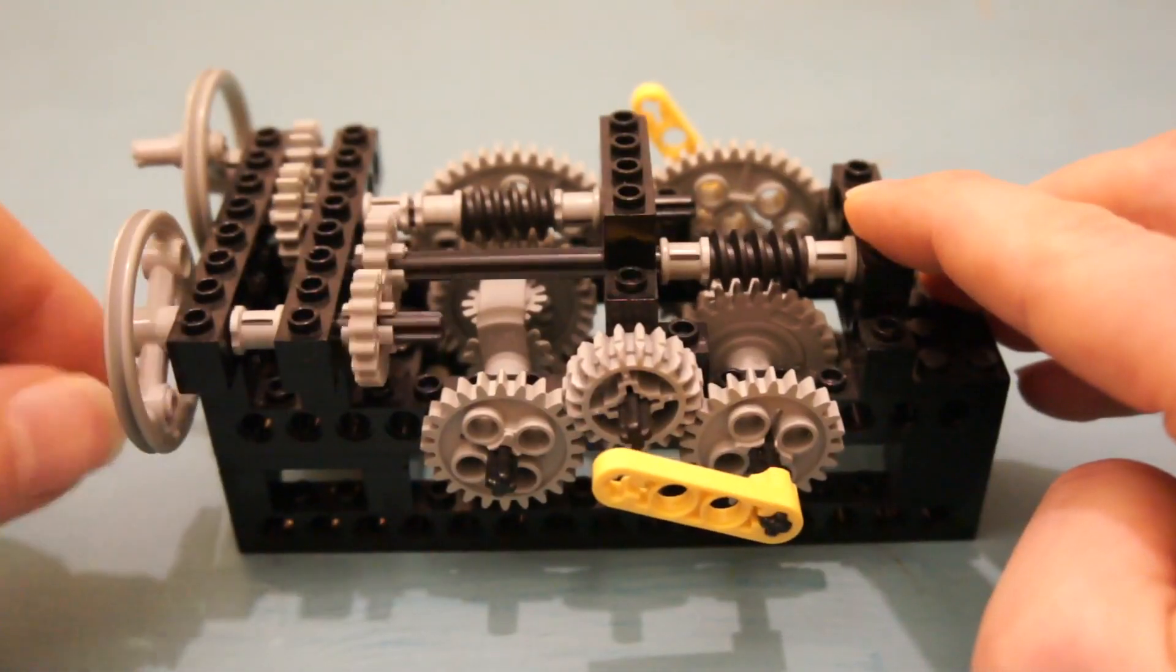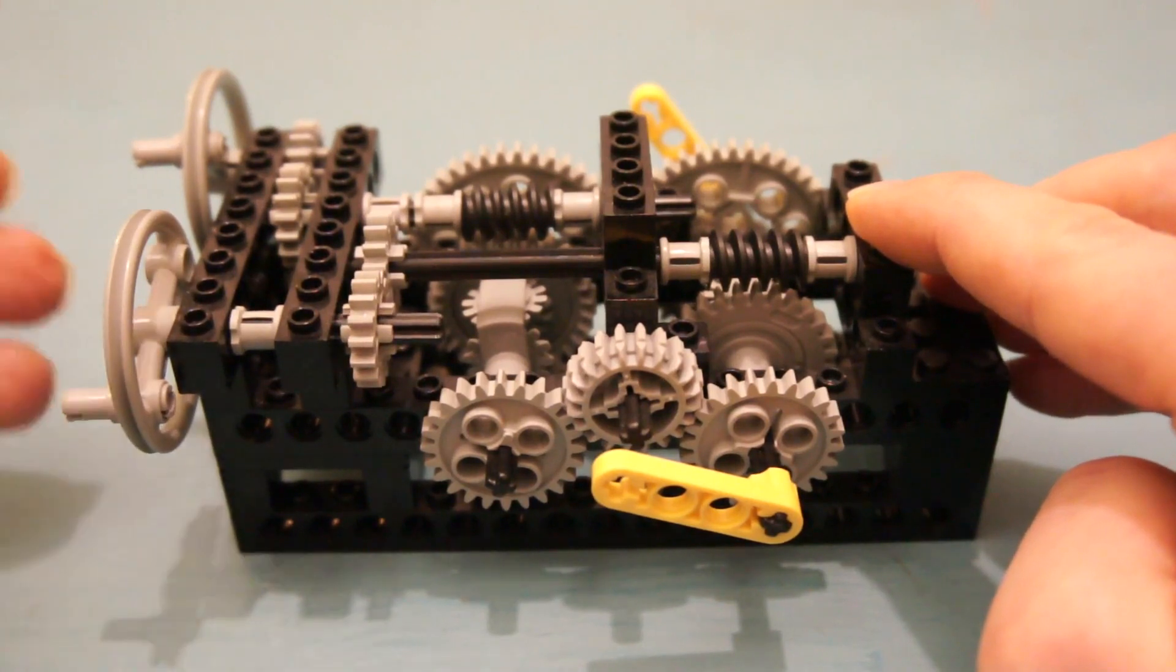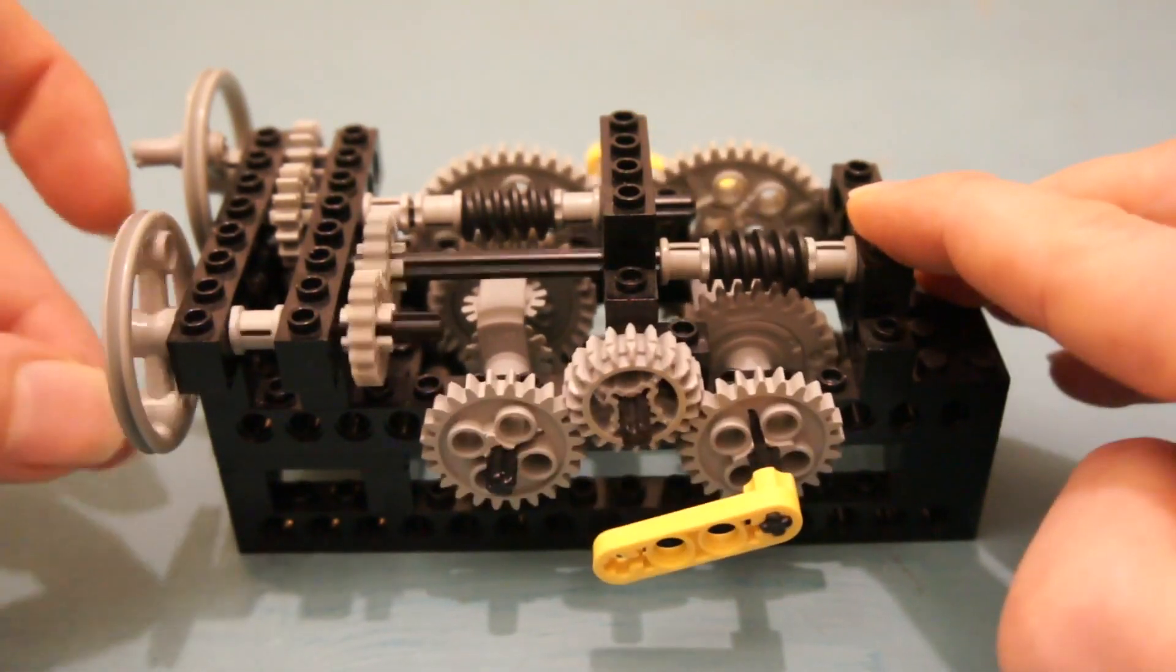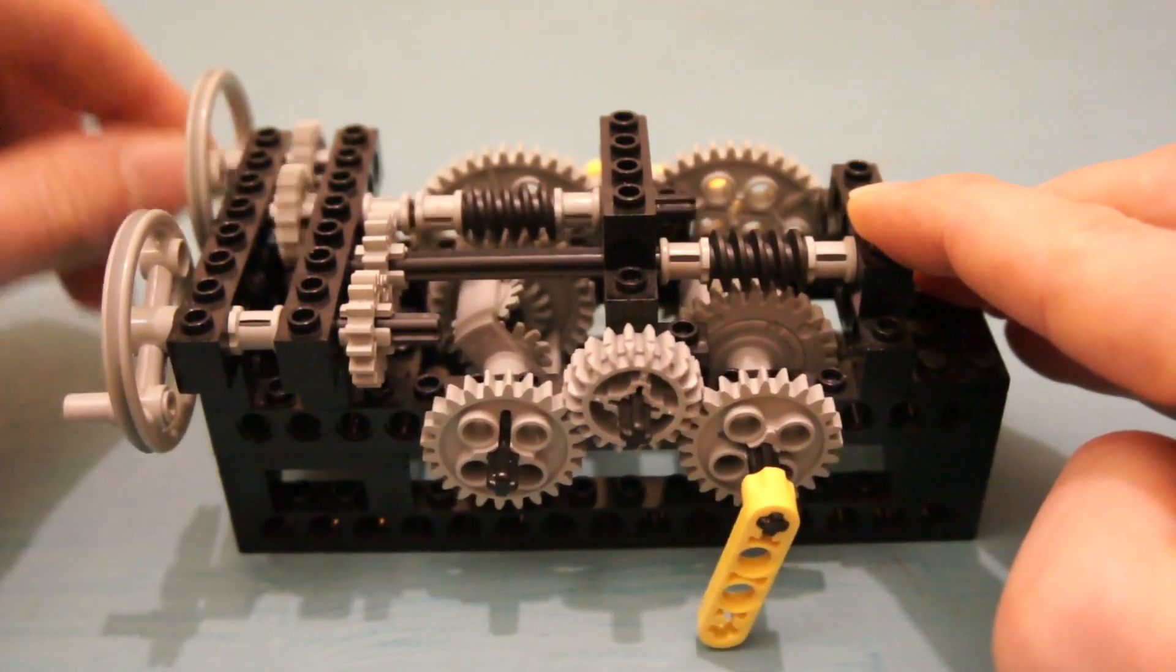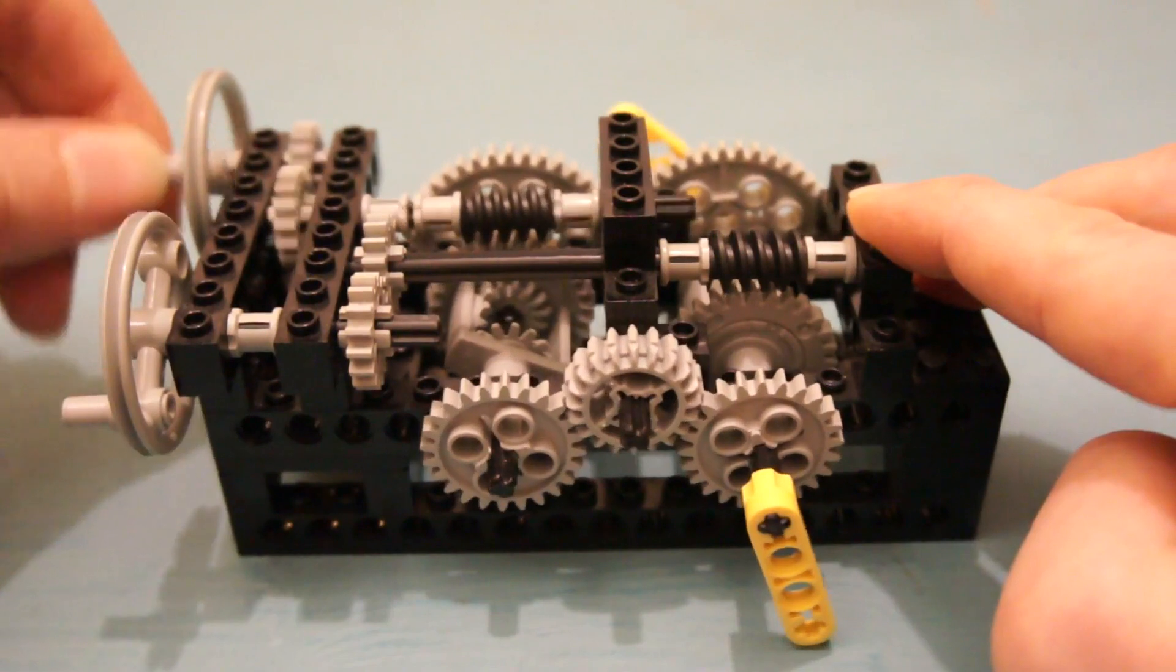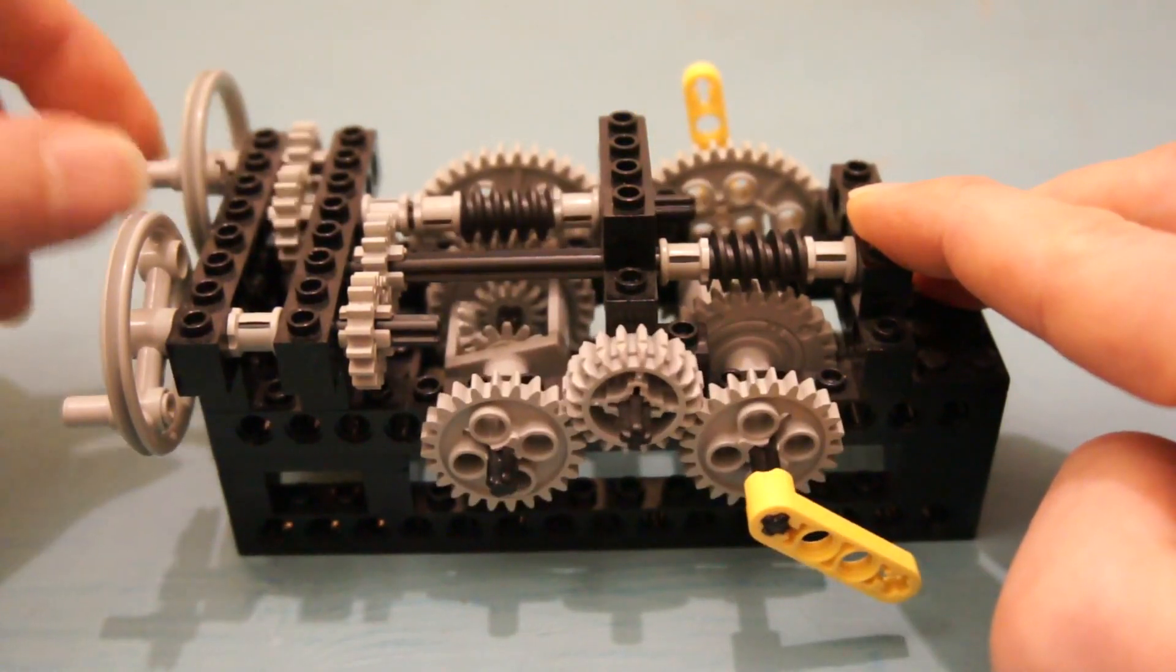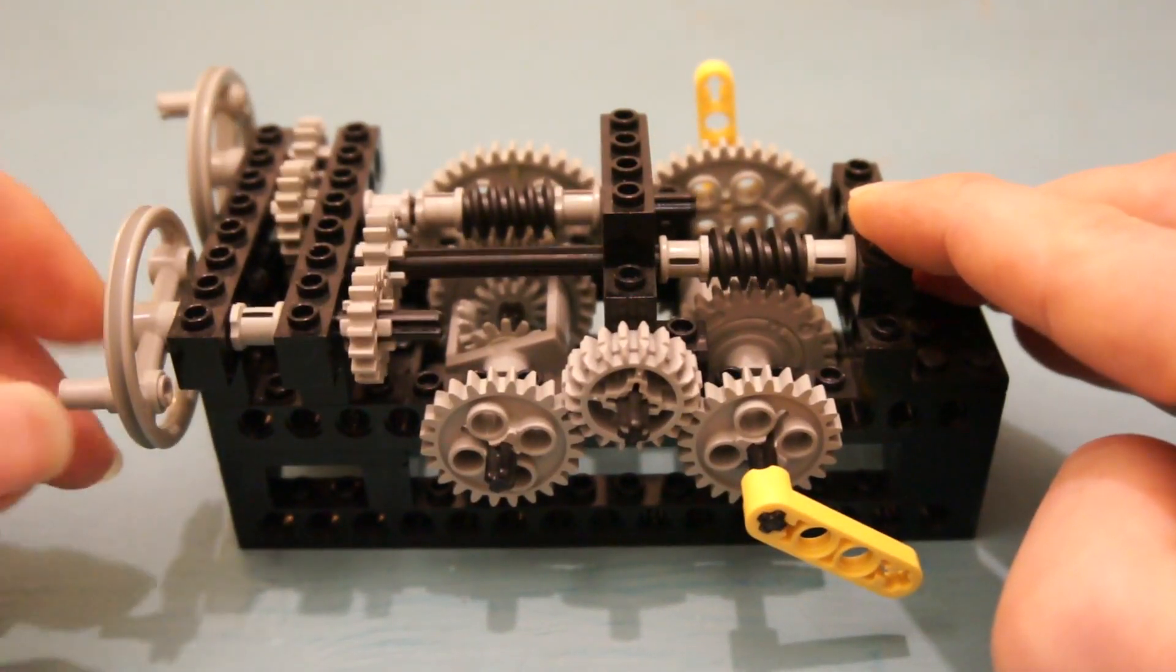For example, you can use a powerful brushless motor, maybe even sensored, to do the drive, and a cheaper brushed motor with a respective ESC to do the steering. And another advantage here is that